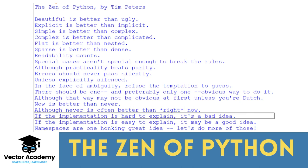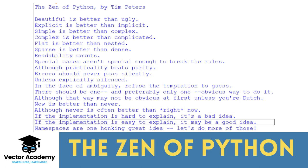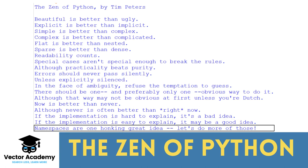If the implementation is hard to explain, it's a bad idea. If the implementation is easy to explain, it may be a good idea. Namespaces are one honking great idea — let's do more of those.